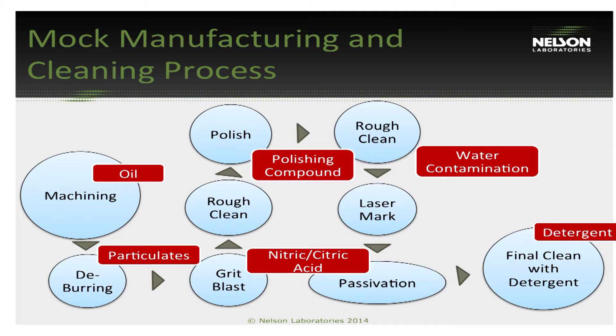This is a mock manufacturing process on screen, representing what a typical process might look like. Whatever comes in contact with the device should be reduced or removed during cleaning. In the machining process, an oil could be left behind. Deburring smooths rough edges and may leave particulates. A polishing step may involve a polishing compound. Rough cleaning steps may introduce water, which can carry microbiological contamination or heavy metals. Passivation may leave nitric or citric acid residuals, and detergents or cleaning compounds could also remain. You want to ensure these residues are removed or reduced through the cleaning validation process.